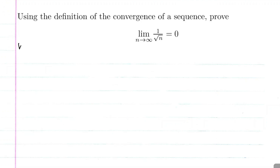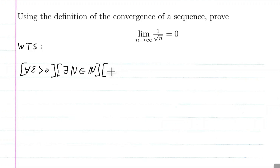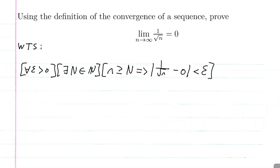So this is what we want to show. We want to show that for every epsilon greater than zero, there exists a capital N contained in the natural numbers such that little n greater than or equal to big N implies that the absolute value of one over the square root of n minus zero is less than epsilon. There's eventually a term in the sequence capital N where any n after that, the difference between one over the square root of n and zero is going to be an arbitrarily small number — less than epsilon, which is a really small positive number.